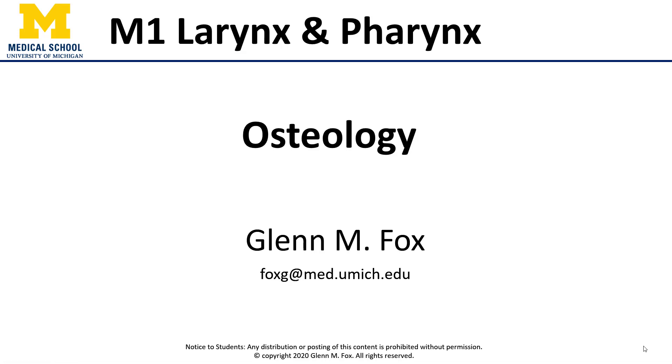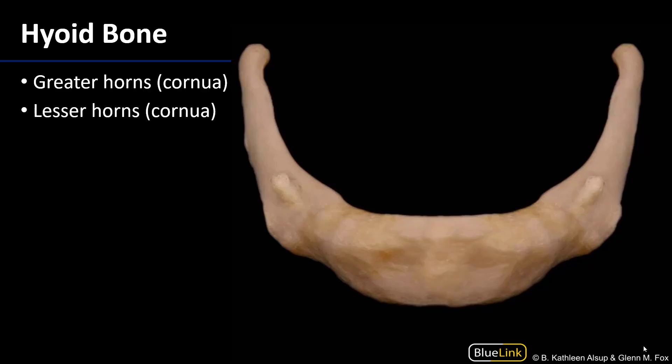Hello everyone, this is Dr. Fox. Let's talk about the osteology of the larynx and pharynx. Let's begin with the hyoid bone. The hyoid bone gets its name from hyoidius, the Greek which means shaped like an epsilon, which is somewhat U-shaped, and the hyoid bone is somewhat U-shaped.